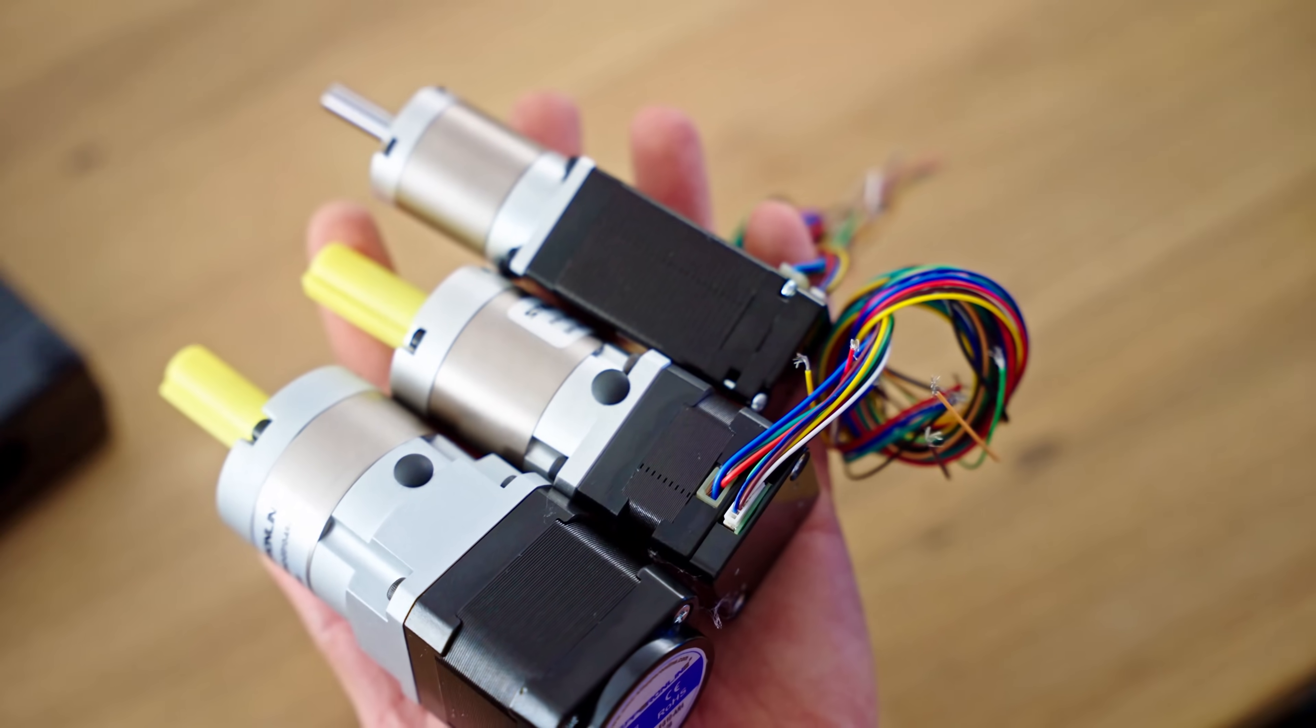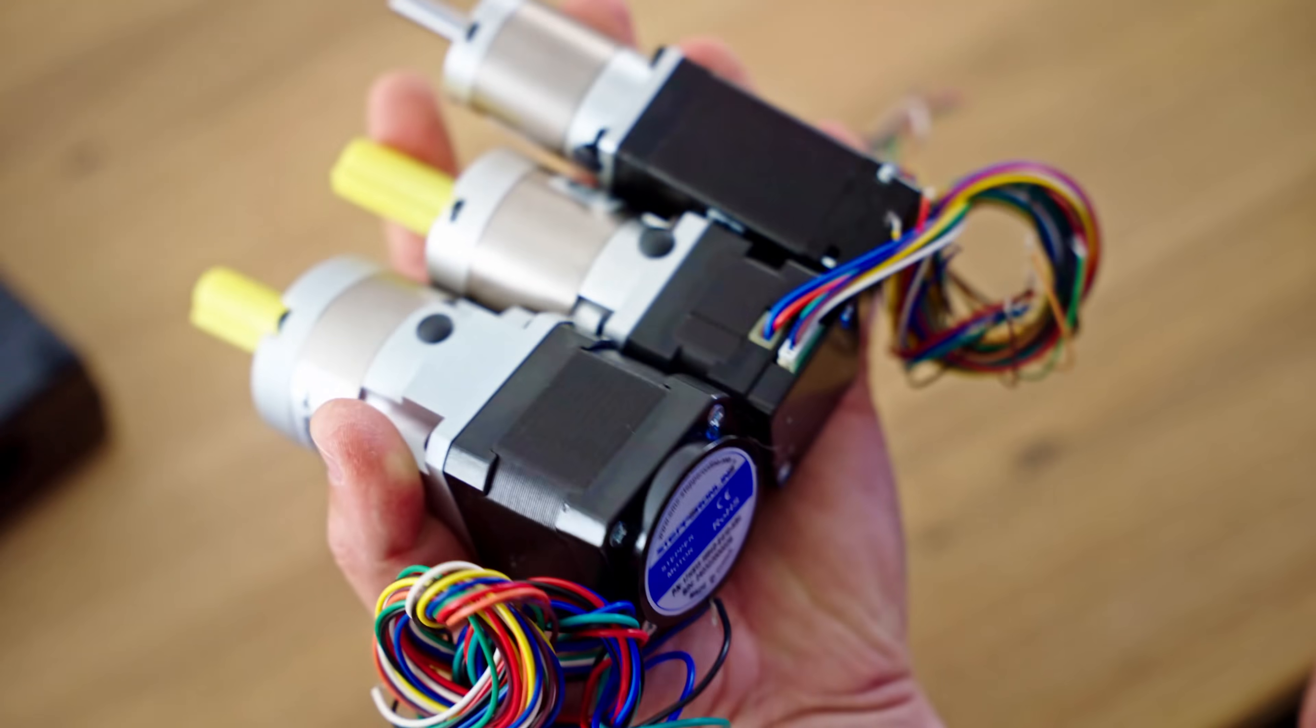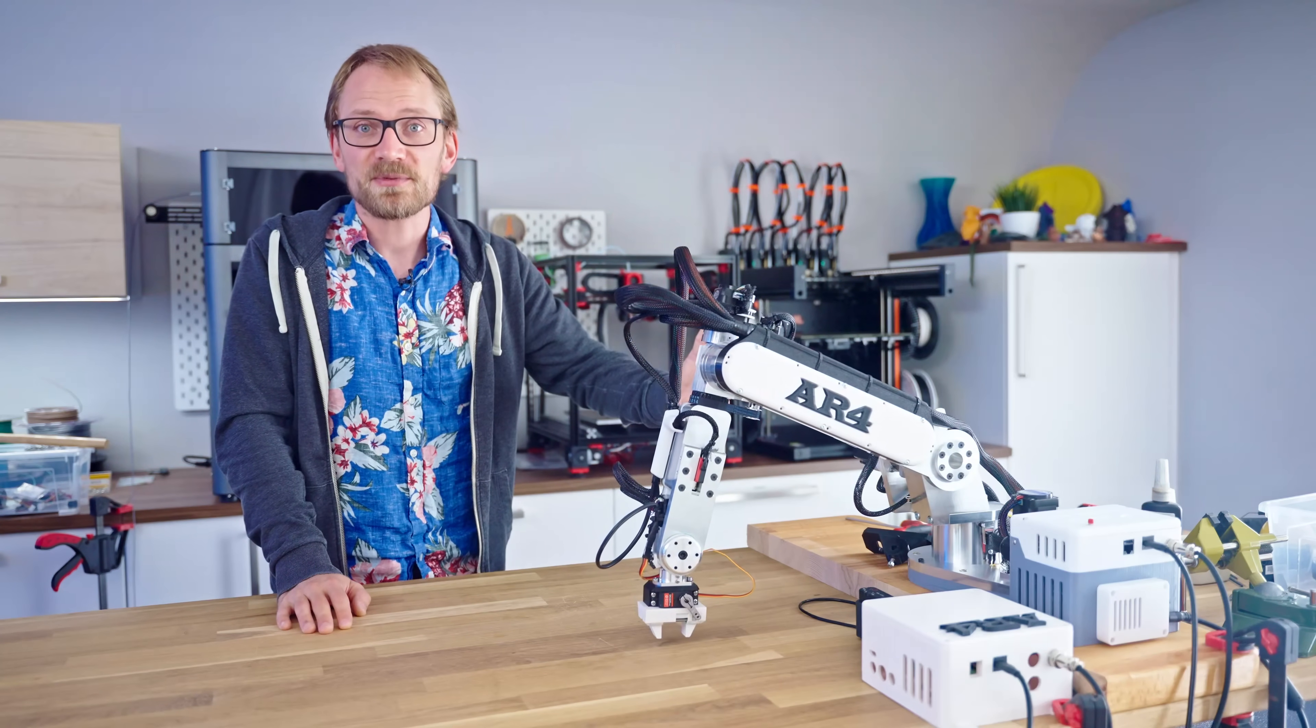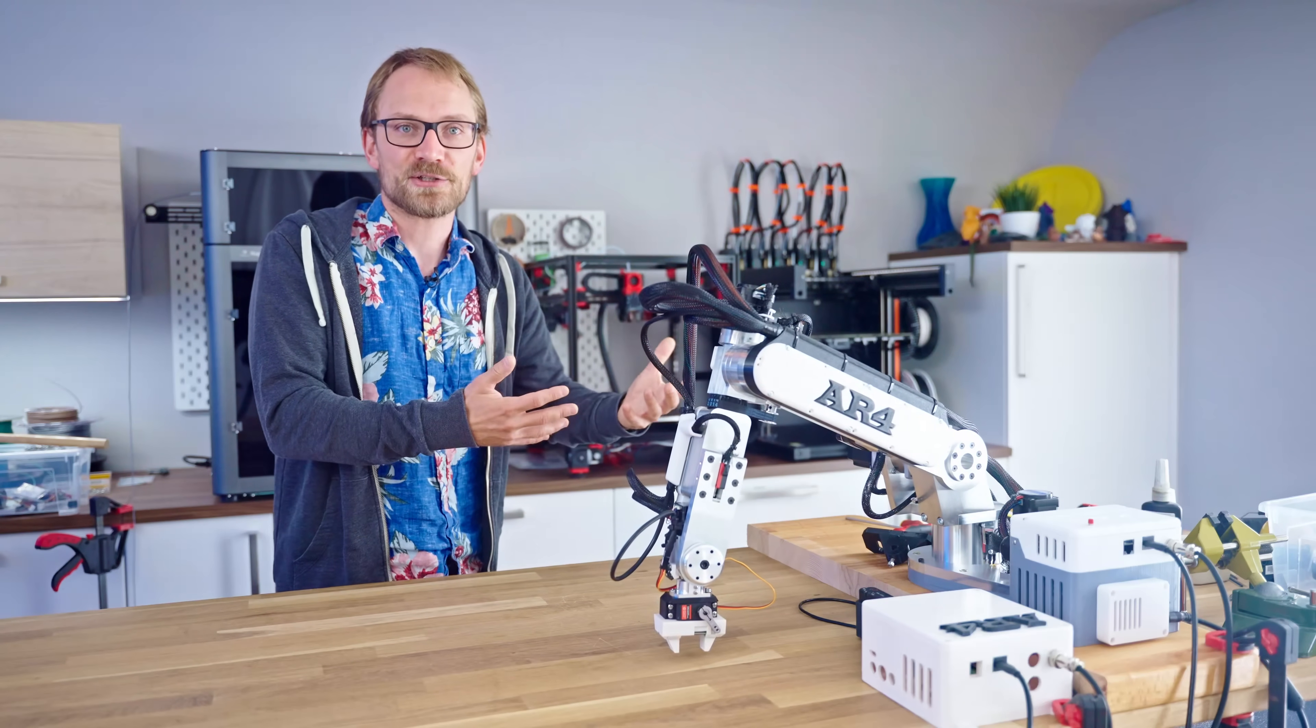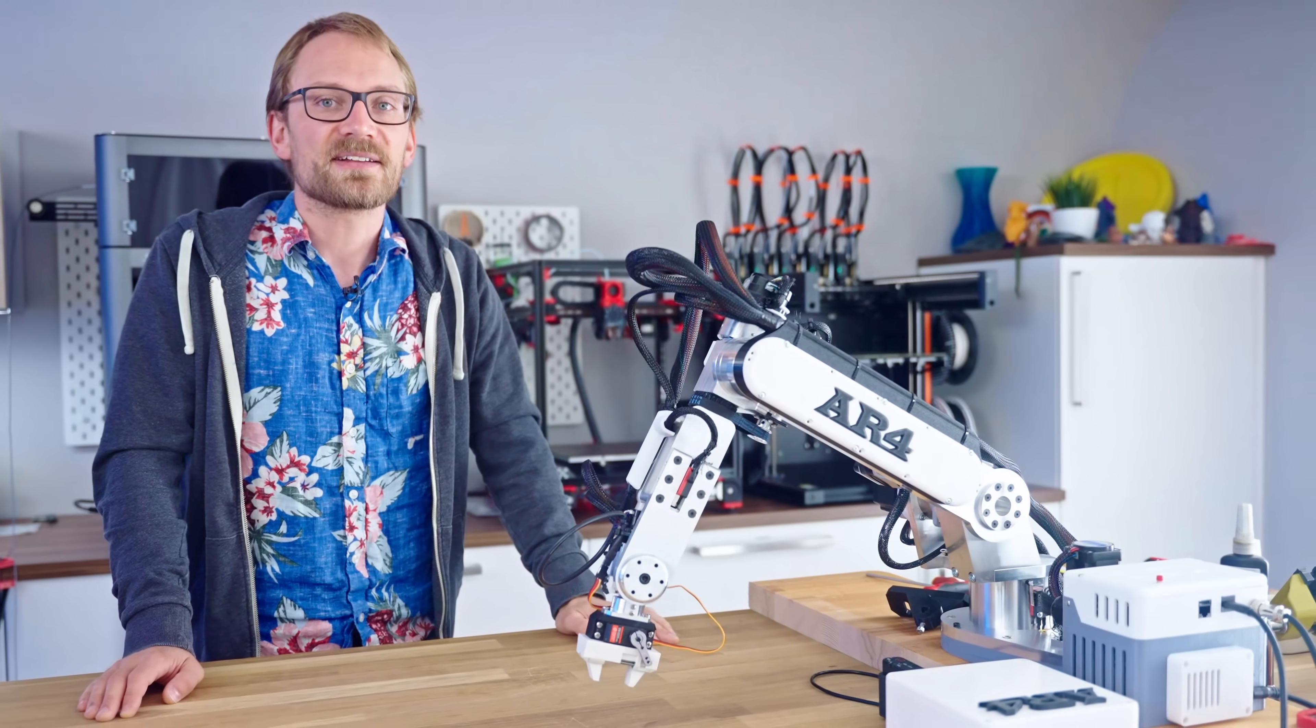One thing I didn't expect was for all these motors to have encoders straight built into them. In this case, these allow the electronics to detect when a motor isn't moving exactly as it's instructed. The firmware doesn't actually correct for skipped steps, but at least it can catch it. So that should be all the parts that I need, let's get started with the build.